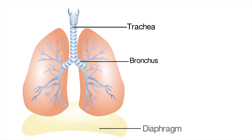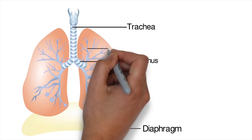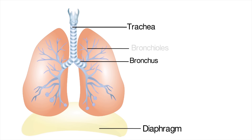Then we have a muscle at the bottom called the diaphragm. The diaphragm is really important — when it moves down, that's when we breathe in, drawing air into the lungs. When it moves up, that forces the air out of the lungs. At the end of each bronchus, it branches into tinier tubes called bronchioles.